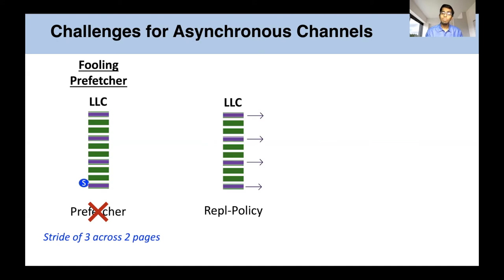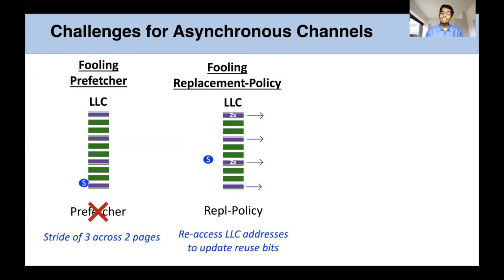Next, the replacement policy can preemptively evict addresses installed by the sender before the receiver has had a chance to access them. To address this, Streamline intelligently has the sender re-access its addresses installed in the LLC to engineer reuse and fool the replacement policy into protecting these addresses from preemptive evictions.